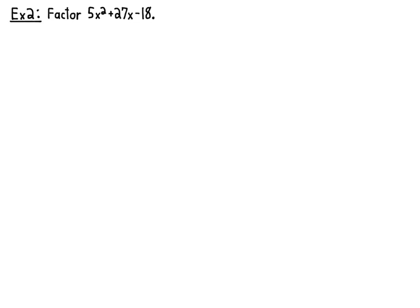Factor 5x squared plus 27x minus 18. That's not that much harder. The 18 factors, what, 1 times 18, 2 times 9, and 3 times 6. So there's three ways of factoring it. But the 5 is easy.